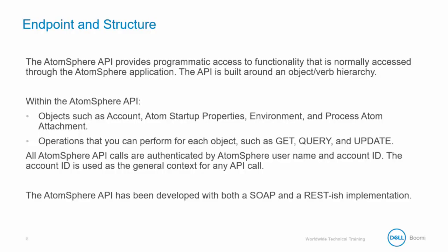The AtomSphere API provides programmatic access to functionality that is normally accessed through the AtomSphere application. The API is built around an object-verb hierarchy, which parallels the basic object-oriented programming paradigm as well as the web service implementation behind REST.